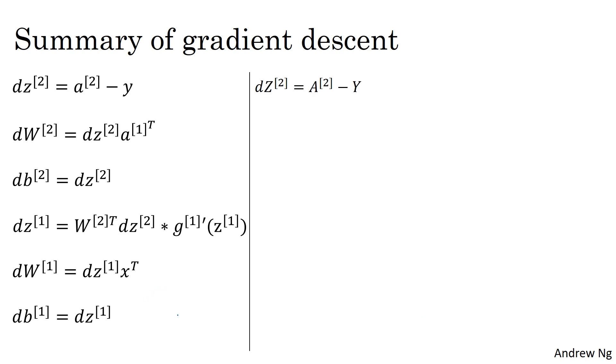First, if you take these dz's for different training examples and stack them as the different columns of the matrix, and same for this and same for this, then this is the vectorized implementation. And then here's how you can compute dw2. There is this extra one over m because the cost function J is this one over m of sum from i equals one through m of the losses.